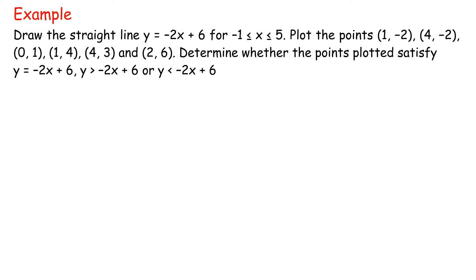Example: Draw the straight line y equals negative 2x plus 6 for negative 1 less than or equal to x less than or equal to 5. Plot the points (1, negative 2), (4, negative 2), (0, 1), (1, 4), (4, 3), and (2, 6). Determine whether the points plotted satisfy y equals negative 2x plus 6, y greater than negative 2x plus 6, or y less than negative 2x plus 6.